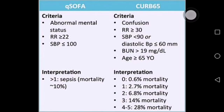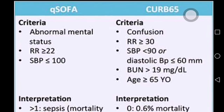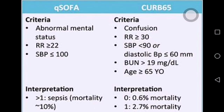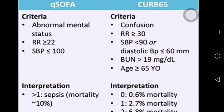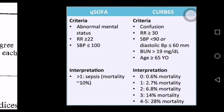To summarize, QSOFA covers abnormal mental status, respiratory rate, and systolic blood pressure — very easy to remember and easy for examiners to ask. Another important score is CURB-65, which is used for community-acquired pneumonia. The letters stand for: C — confusion, U — urea, R — respiratory rate, B — blood pressure, and 65 — age of 65 years. You should know every letter of this mnemonic.